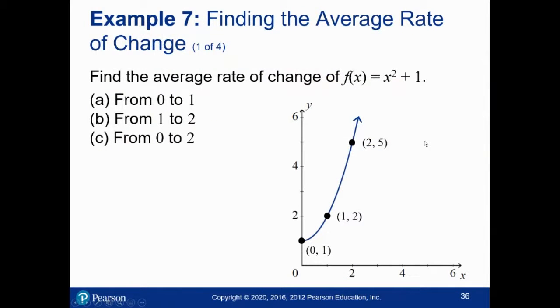So can we compute the average rate of change from 0 to 1, from 1 to 2, from 0 to 2? Every time you change where you're looking, you could possibly be changing your average rate of change.